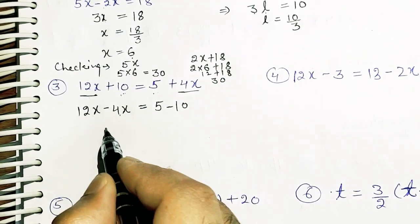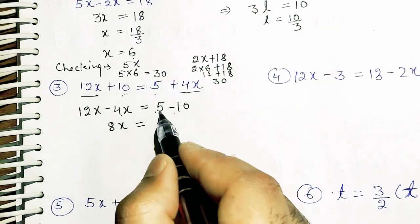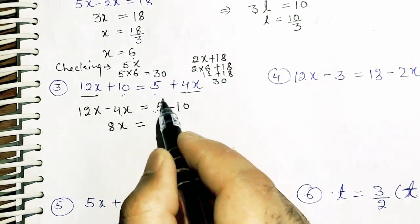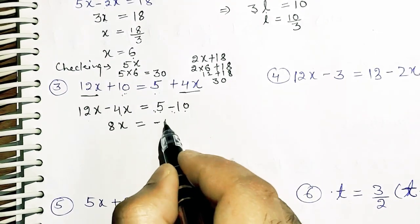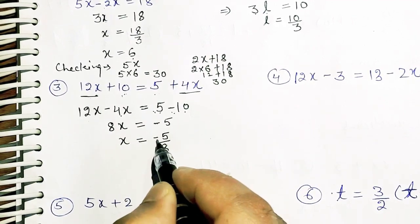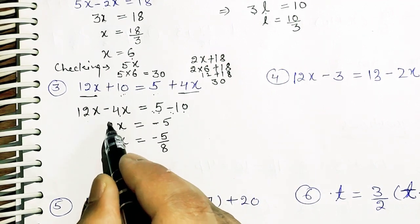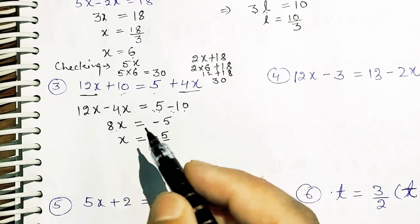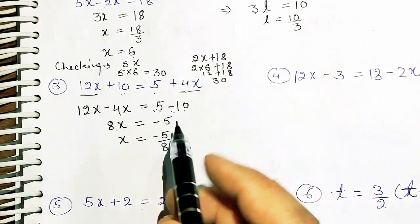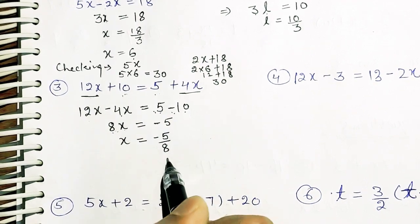So 12x minus 4x gives 8x on the LHS. On the RHS we have 5 minus 10. The greater number is 10 with a plus sign, so the result is minus 5. Therefore x equals minus 5 upon 8. Why? Because the sign between 8 and x is multiplication, and whatever number is in multiplication will move to the other side as division.